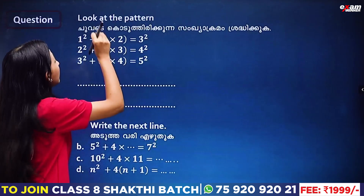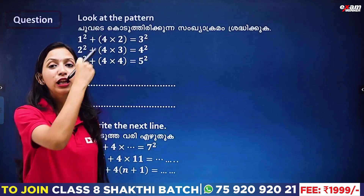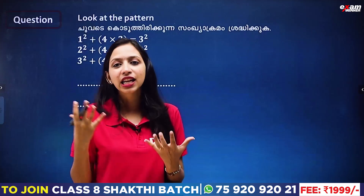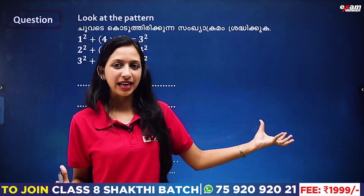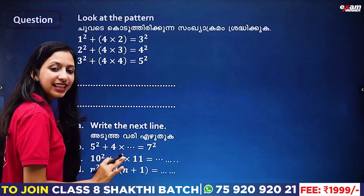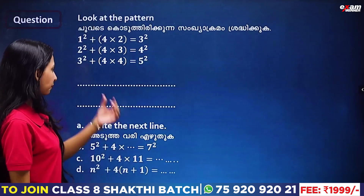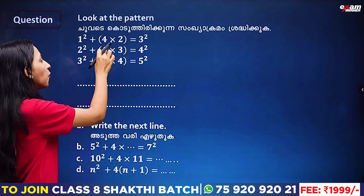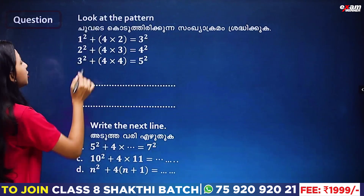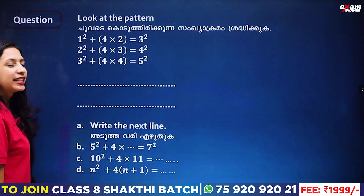Look at the pattern. If we show our identities in the chapter, we have a number pattern with different styles. The pattern is: 1 squared plus 4 into 2 is equal to 3 squared; 2 squared plus 4 into 3 is equal to 4 squared; 3 squared plus 4 into 4 is equal to 5 squared.